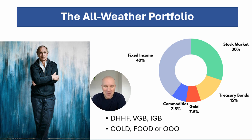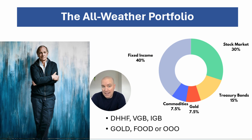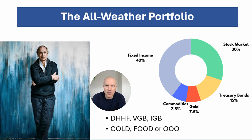Ray Dalio, founder of Bridgewater Associates — a billion-dollar investment fund — has designed his All Weather portfolio to perform well under any economic condition. It's a mix of stocks, bonds, commodities, and gold. Notably, it's dominated by fixed income to smooth the ride, which is also why gold and commodities are included. Only 30% is attributed to the stock market. You can use DHHF for stocks, VGB or IGB for bonds, GOLD for gold, and for commodities take your pick — there's FOOD or OOO (an oil ETF) available on the ASX. So you could replicate this with five or six ETFs, though note the stock market only captures 30% of your allocation here.